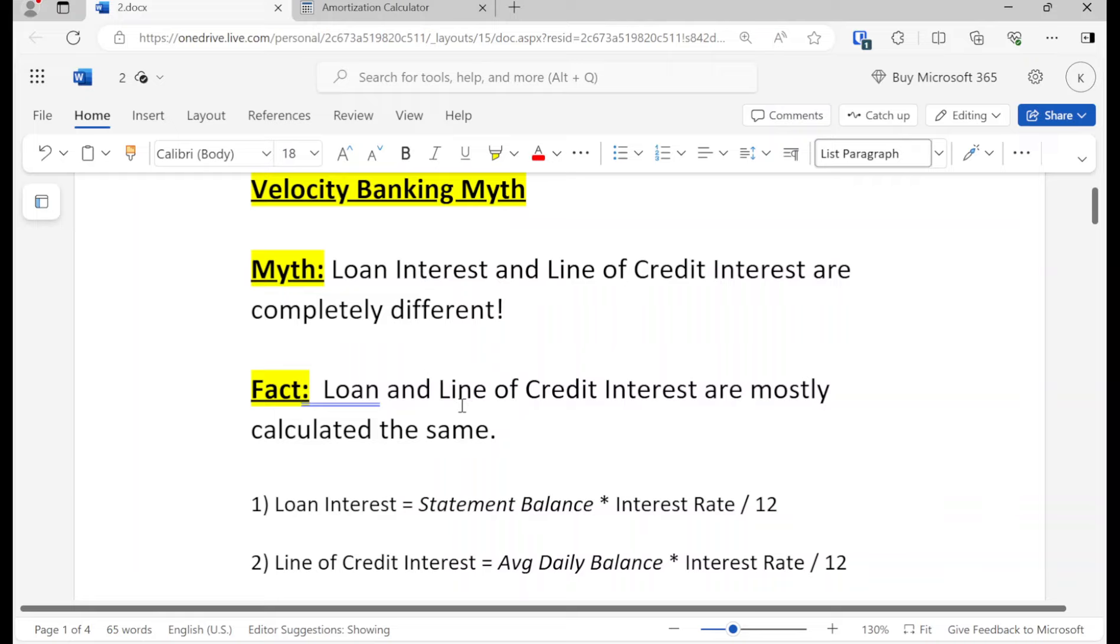And the reason why loan interest rates are usually lower than line of credit: think of it in terms of software features. If you get the free version of software, you might get limited access. Whereas if you get the paid version, you can use that software whenever you want. It's the same thing with loans and lines of credit.